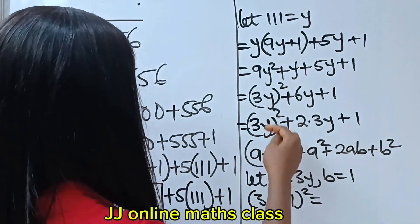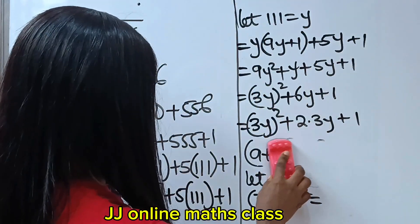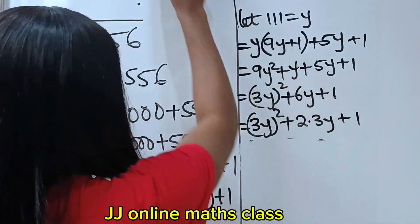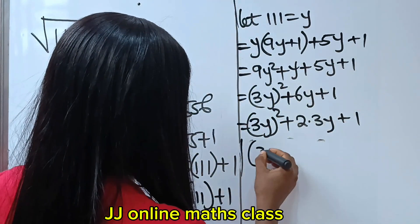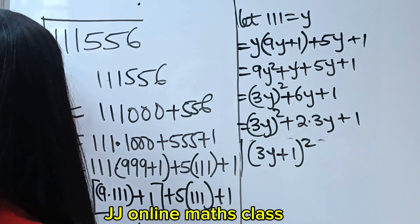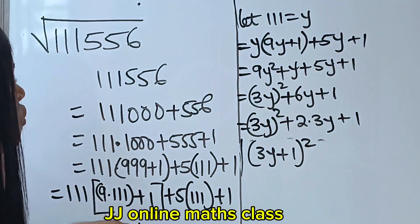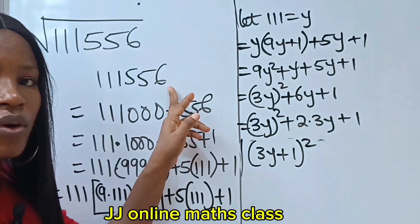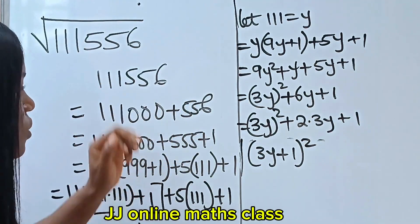So, that means that the whole of this can be written as 3y plus 1 squared. Now recall that we are asked to find the square root. All this work, all we got is just this. So, I'm asked to find the square root of this.